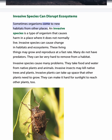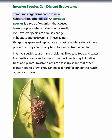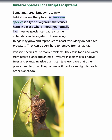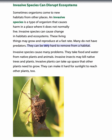Sometimes organisms come to new habitats from other places. An invasive species is a type of organism that causes harm in a place where it does not normally live. Invasive species can cause change in habitats and ecosystems. These living things may grow and reproduce at a fast rate, many do not have predators, and they can be very hard to remove from a habitat.